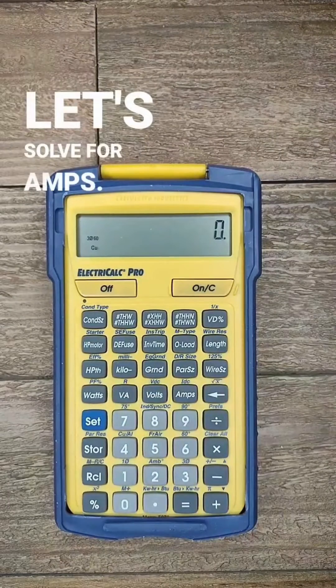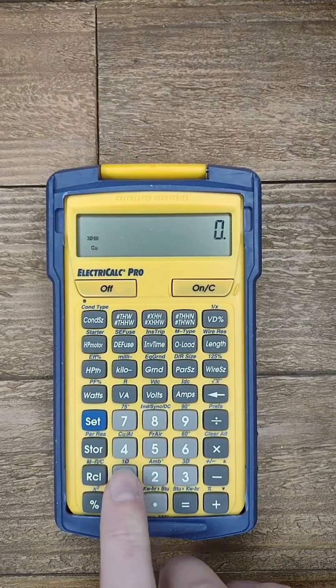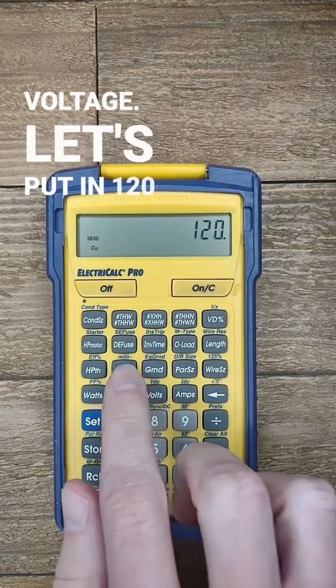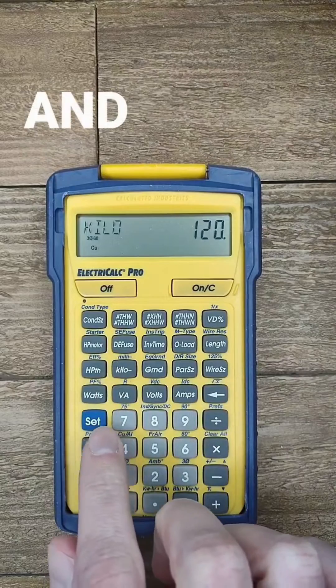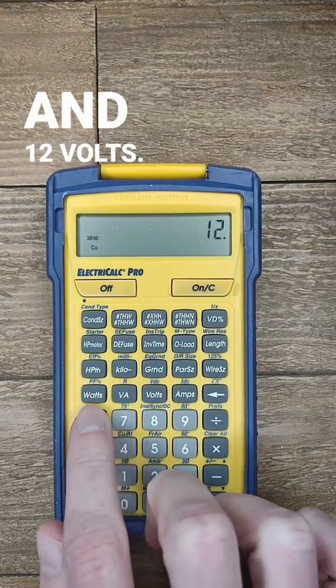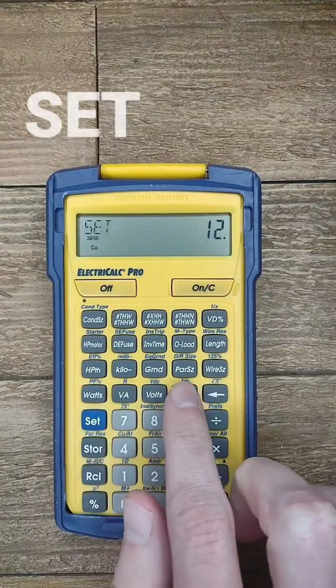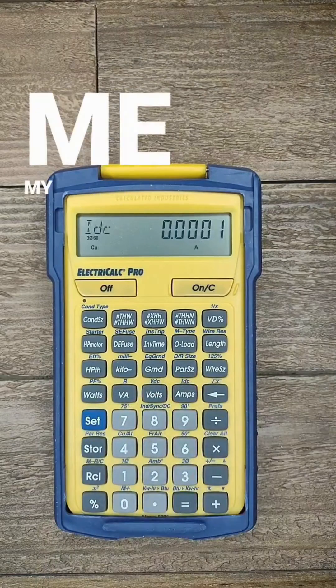Next, let's solve for amps. So I just need to put in the resistance and voltage. Let's put in 120 kilo ohms and 12 volts. Now when I push set and then amps, it'll give me my current.